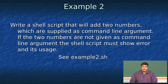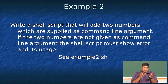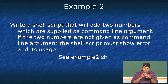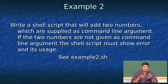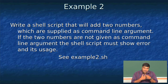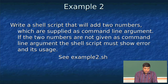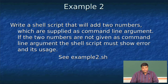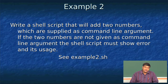In this program we will add two numbers and make use of command line arguments. If the two numbers are not given on the command line, the shell script must throw an error regarding its usage. This is a convention followed when writing any kind of scripts — the user must be told how to use the script. When writing a shell script, if the user does not type the parameters properly, you are supposed to tell the user how to use the command.